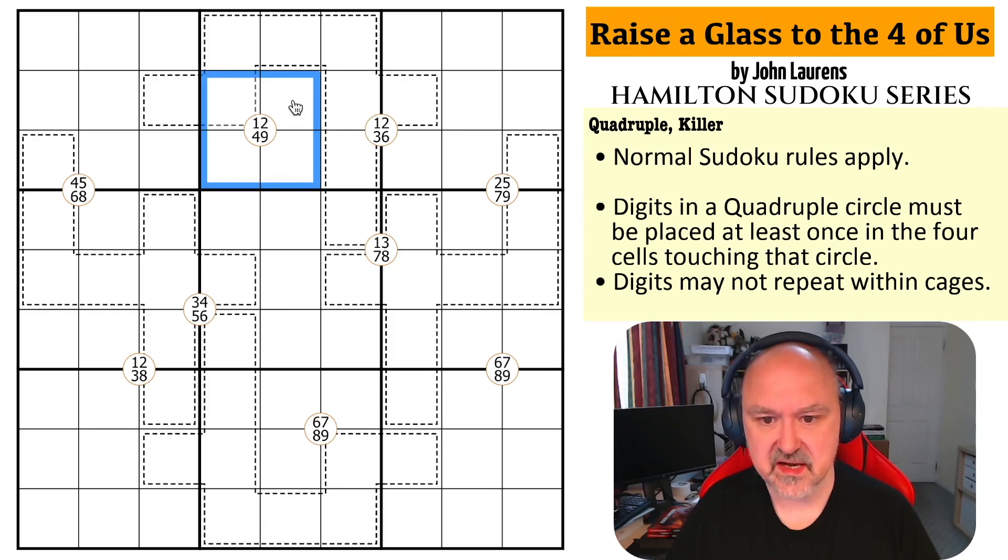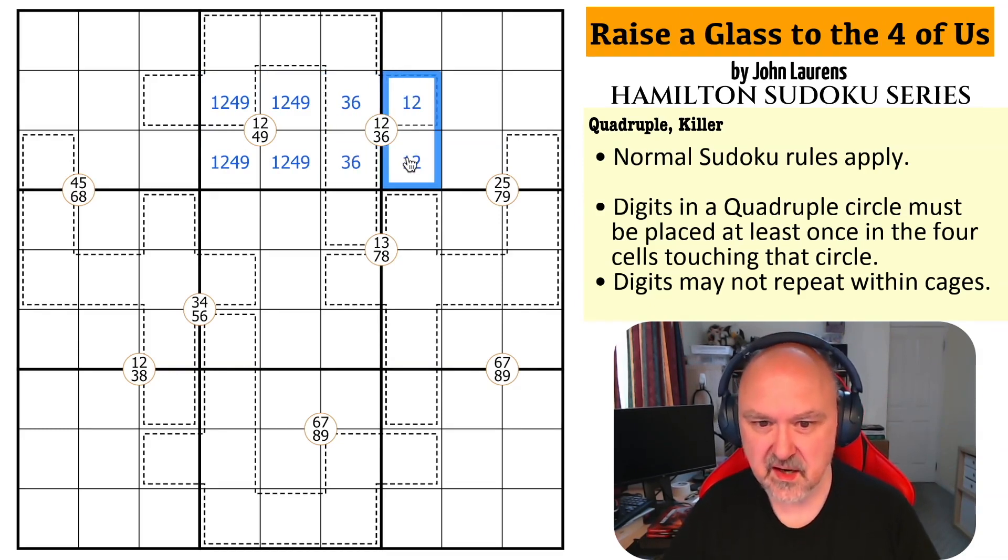So, the first thing that jumps out to me is, this is a 1, 2, 4, 9. So, this must contain 1, 2, 4, 9. But, I also have to put 1, 2 around this. So, this has to be 1, 2. And, this has to be 3, 6. So, that's absolutely forced.